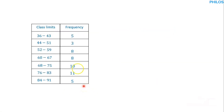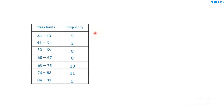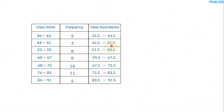Let's recall the data we organized in the previous tutorial. We have class limits and frequency. Now assuming we are given this table or you've prepared a table yourself and you want to use it to create a histogram, the first thing you need to do is to create the class boundaries if you don't have them. In the last tutorial we learned how to create class boundaries, and this is what we got. We need the class boundary and the frequency to prepare the histogram.